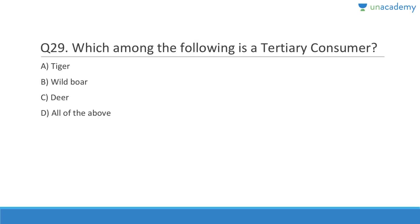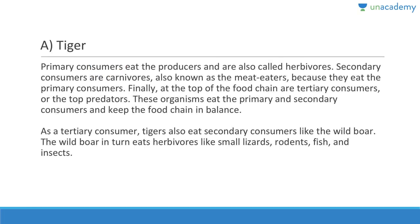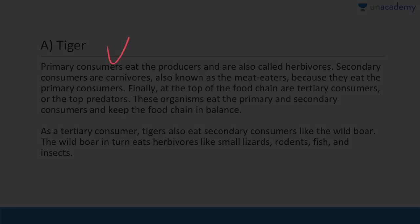Question 29: Which among the following is a tertiary consumer? Primary consumers are herbivores, so deer and wild boar can't be tertiary. The only one that fits is tiger. Tigers can eat secondary consumers like wild boar, wild boar can eat small herbivores, and herbivores eat plants. Answer is A. Primary consumers eat producers and are called herbivores; secondary consumers are carnivores; tertiary consumers are top predators that eat primary and secondary consumers.